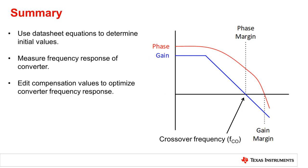When finding the frequency response of an OTA buck converter first use the datasheet equations to determine the initial values making sure to place the poles and zeros in the correct spot. Then measure the frequency response of the converter. From here you can change the compensation values in order to allow for more phase margin, more gain margin, or higher crossover frequency.